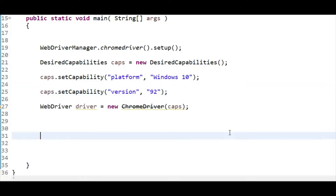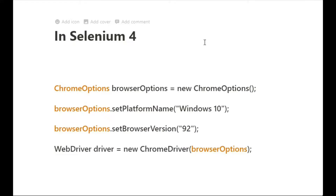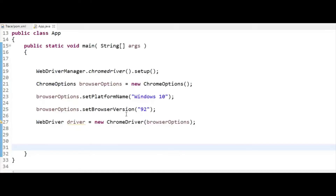Now in Selenium 4 the Options object is introduced. If you are using Chrome browser, you can use the ChromeOptions class. If you are using Firefox browser, you can use FirefoxOptions. If you are using IE browser, there is IEOptions. The syntax is: create an object of ChromeOptions as new ChromeOptions, then set whatever capability you want, and just like with DesiredCapabilities, pass it as an argument to the browser driver.